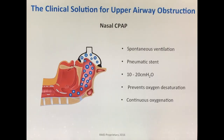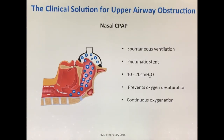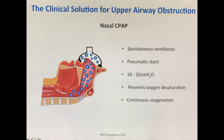The clinical solution for upper airway obstruction is nasal CPAP, where CPAP stands for Continuous Positive Airway Pressure. When we apply the nasal mask and connect it to a positive pressure-delivering device, it creates positive pressure within the airway — specifically the nasopharynx — and acts as a pneumatic stent, which lifts the soft palate off the retropharyngeal wall and creates a patency that allows oxygen to continue to flow into the lungs and the lungs to stay inflated. Typically, the amount of positive pressure used is between 10 to 20 centimeters of water. This helps prevent desaturation and allows for continuous oxygenation.